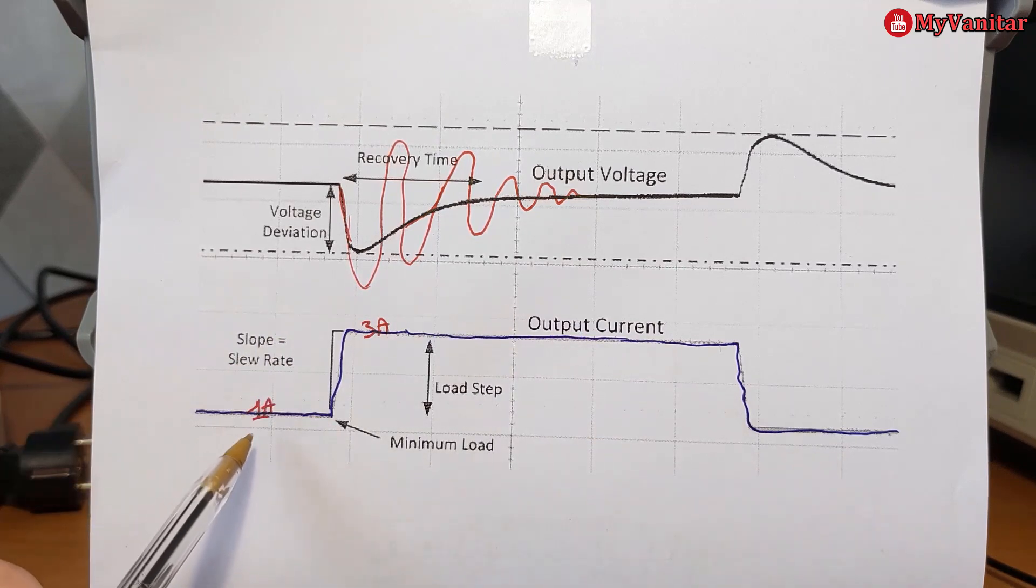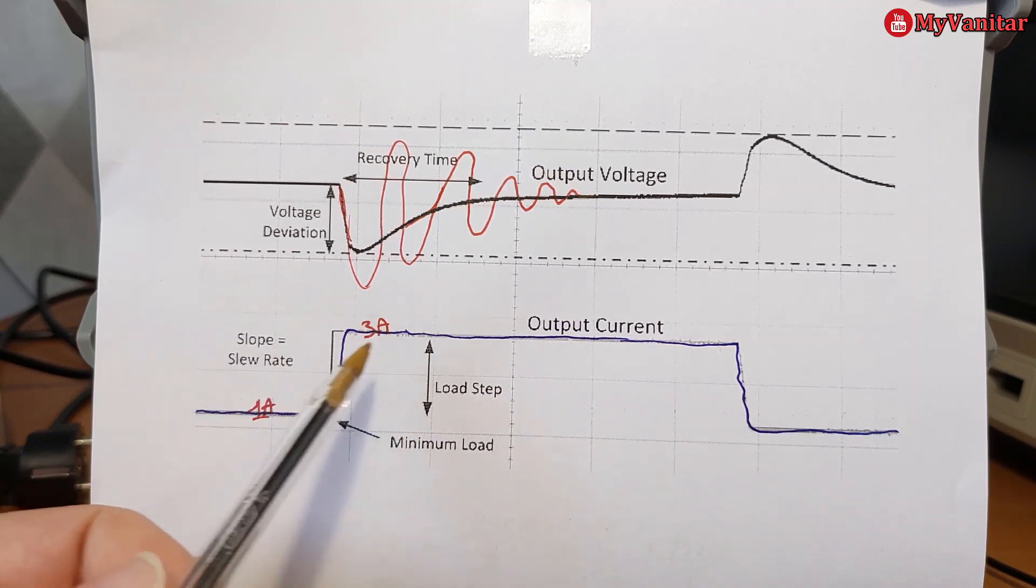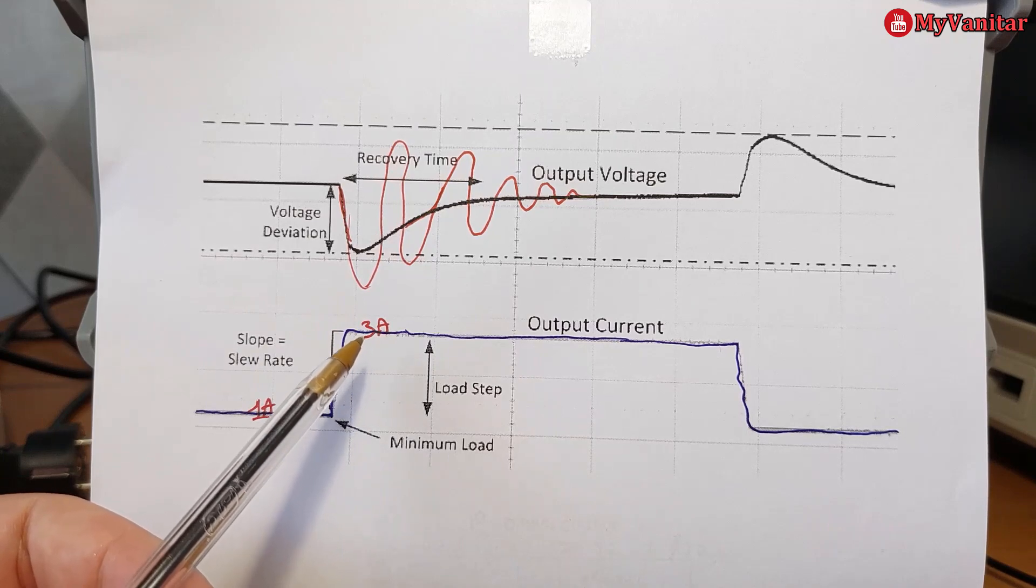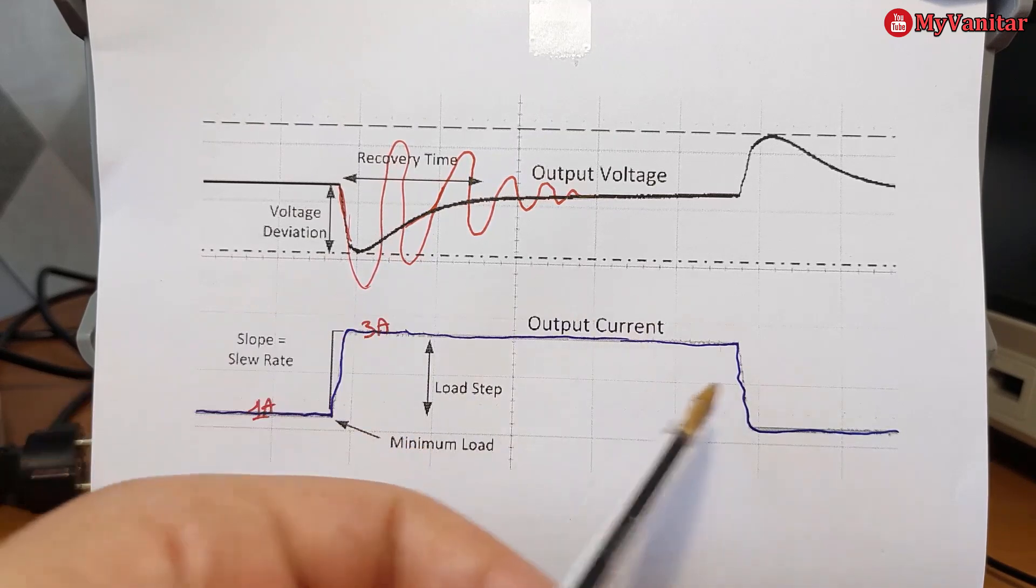The low current will be 1 amp and the high current will be 3 amps, because 3 amps is the maximum continuous current for the buck converter. The DC load will generate this pulse continuously.